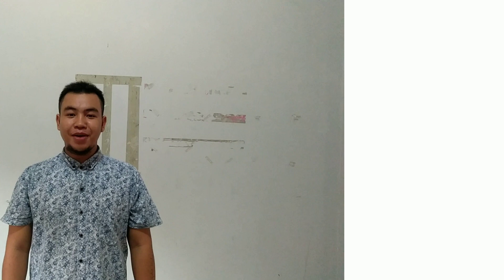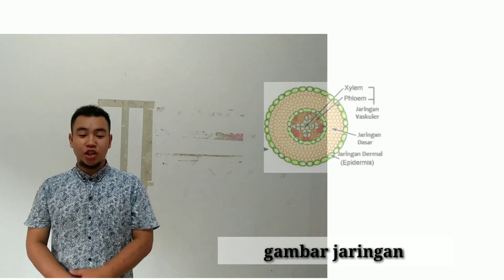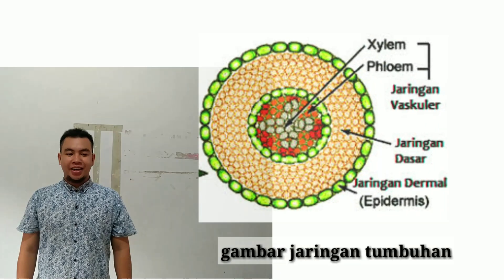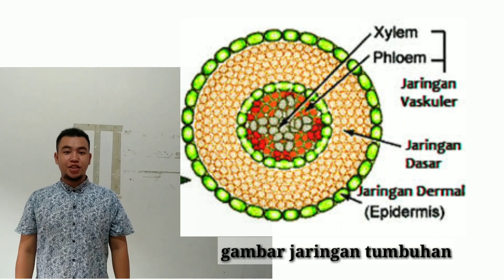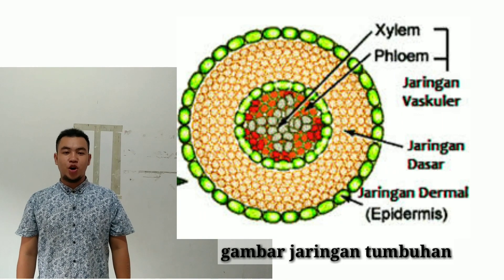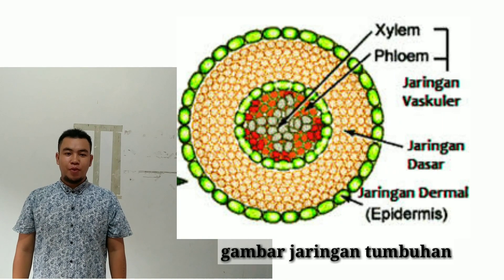First, I am going to talk about jaringan tumbuhan. Jaringan tumbuhan adalah bentuk kumpulan sekelompok sel yang mempunyai bentuk dan fungsi yang sama.